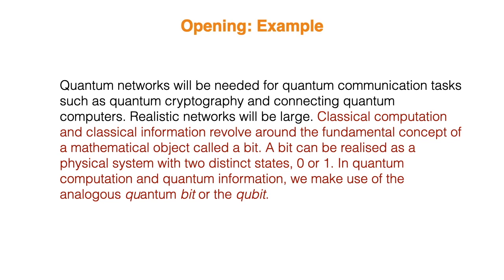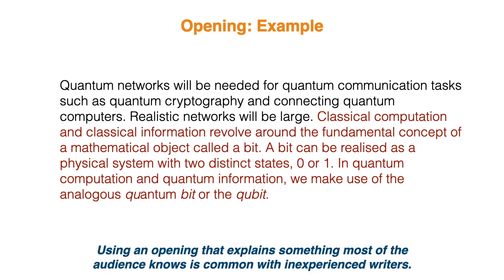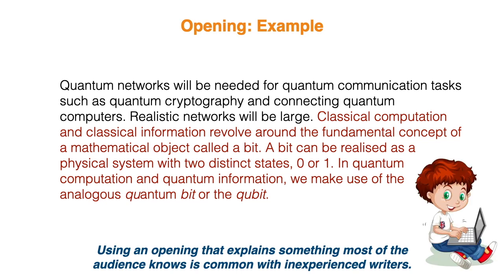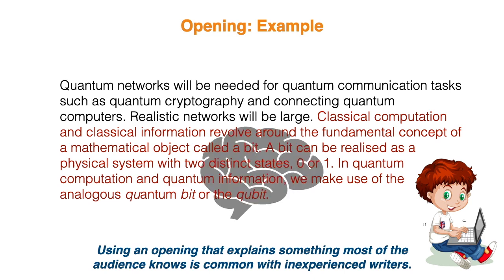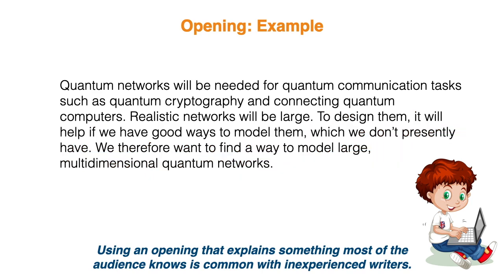What about this version of the example? What is this paper actually about? You can't tell. The opening offers no direction as to where the story is going. Rather, it goes over basic textbook material about quantum information science and qubits. Using an opening that explains something most of the audience knows is common with inexperienced writers. If you're just starting out, you're probably still learning the material and trying to assimilate it into what you know — it isn't yet ingrained knowledge, and you might have a hard time jumping over this material. There is nothing wrong with using your first draft to collect your thoughts by writing them down. But if you do this, remember that when the time comes to revise, you should figure out where the real story starts, and delete the things that don't fit.